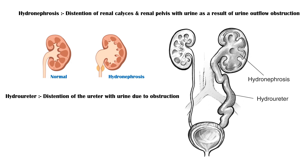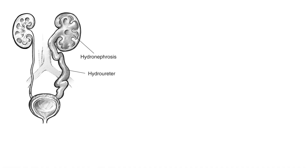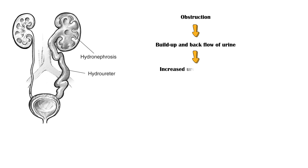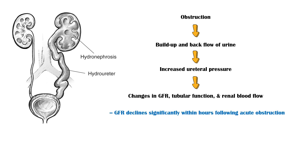In both hydronephrosis and hydro-ureter, obstruction of urine outflow leads to build-up and back-flow of urine, increasing the pressure inside the ureter. This will ultimately lead to changes in GFR, tubular function, and renal blood flow. GFR declines significantly within hours following acute obstruction, and the tubular ability to transport ions and dilute urine will be severely impaired.